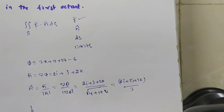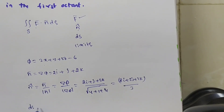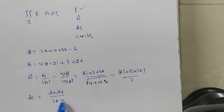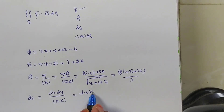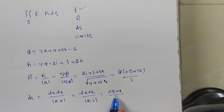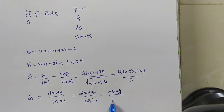Next I need to find dS. dS means either it is a projection on the xy plane, yz plane, or zx plane. There are three options: dx dy / |n̄·k| for xy plane, dx dz / |n̄·j| for xz plane, and dy dz / |n̄·i| for yz plane.